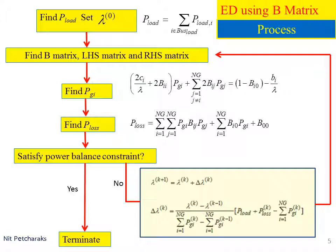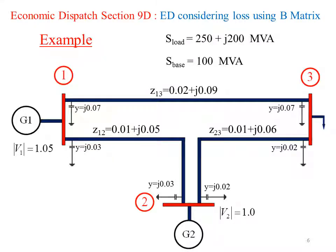Let's learn by doing an example. Suppose there are three buses with two generators at bus one and bus two. Let bus one be swing bus, bus two be voltage controlled bus, and bus three be load bus. This example is the same one in the clip economic dispatch 9B.